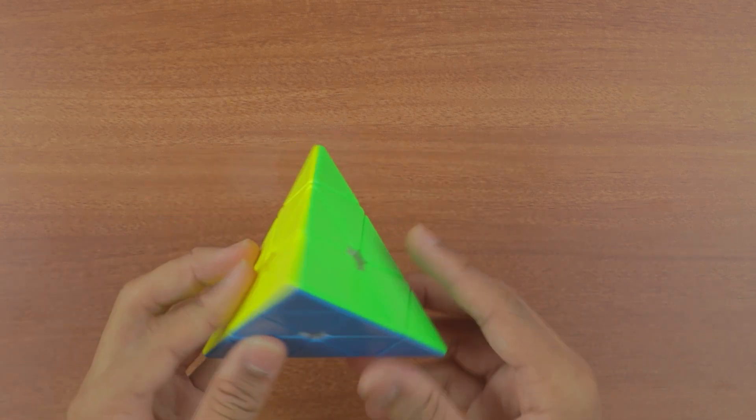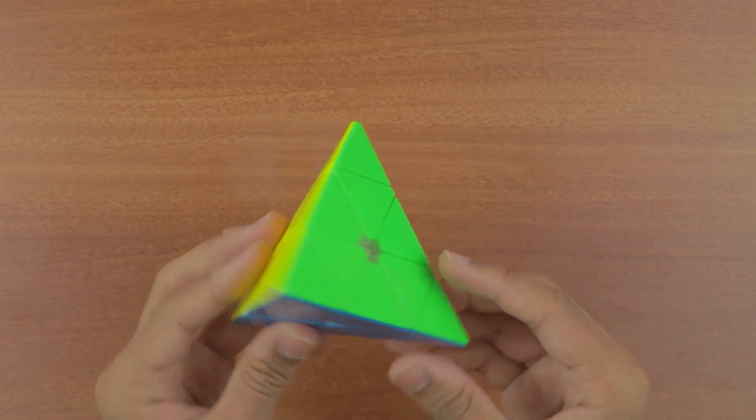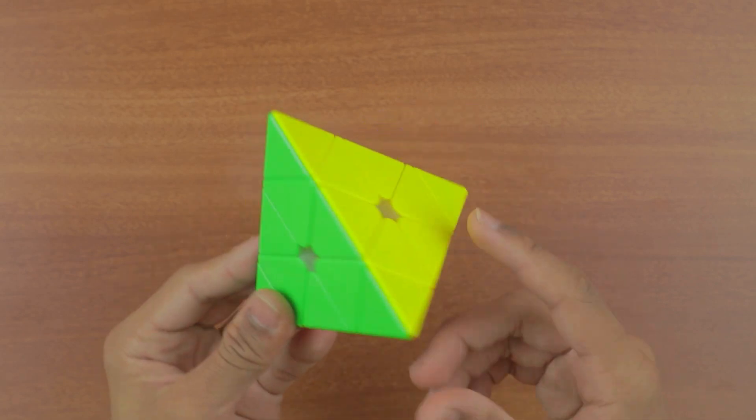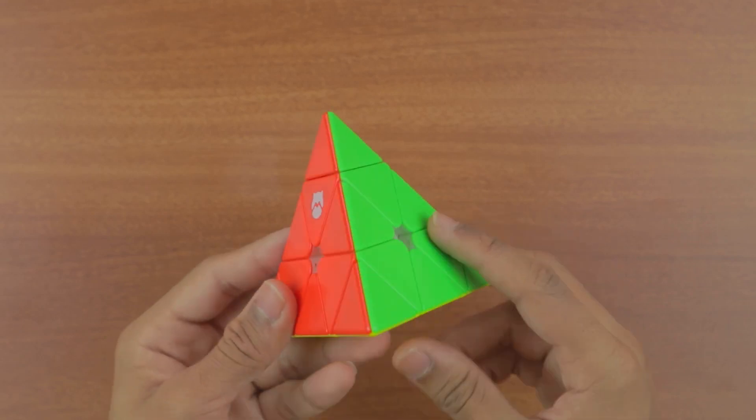The first thing I'm going to say is that it looks and feels on the outside exactly like a GAN Pyraminx. If I compare them, you'll be able to see that they look almost identical apart from this logo. So that's something that's pretty unique about the puzzle.